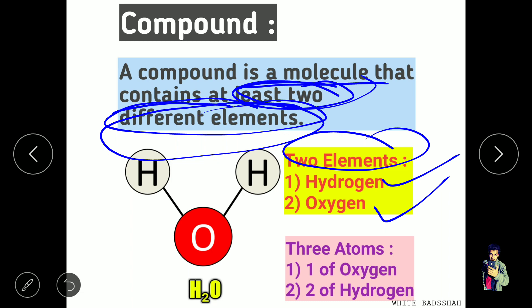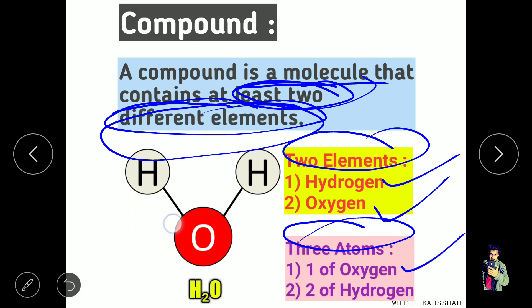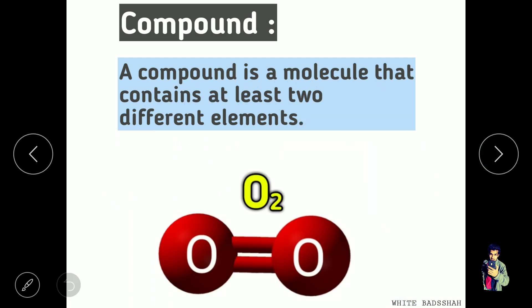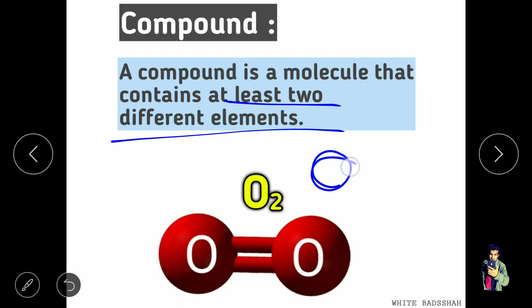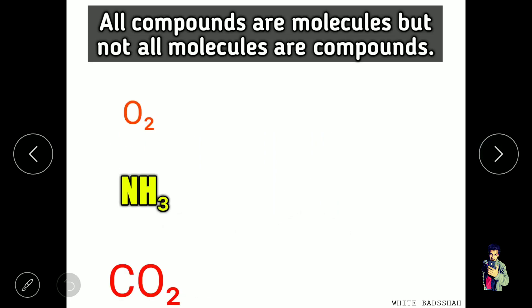Let's take the example of H2O. How many elements are available? First is hydrogen, second is oxygen — only two elements, but three atoms: one oxygen and two hydrogen. Now, is O2 a compound or just a molecule? Remember the definition: a compound must have at least two different elements. O2 has only one element, so O2 is not considered a compound.